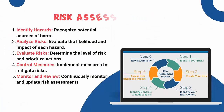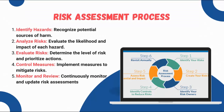The risk assessment process involves several steps. The first is to identify hazards — recognize potential sources of harm. The second is to analyze risks — evaluate the likelihood and impact of each hazard. The third is to evaluate risk — determine the level of risk and prioritize actions. The fourth is control measures — implement measures to mitigate risks. The fifth is to monitor and review — continuously monitor and update the risk assessment. This systematic approach helps ensure that all potential risks are adequately addressed.